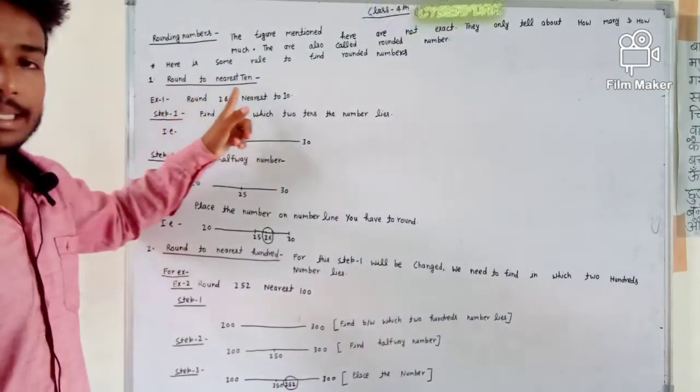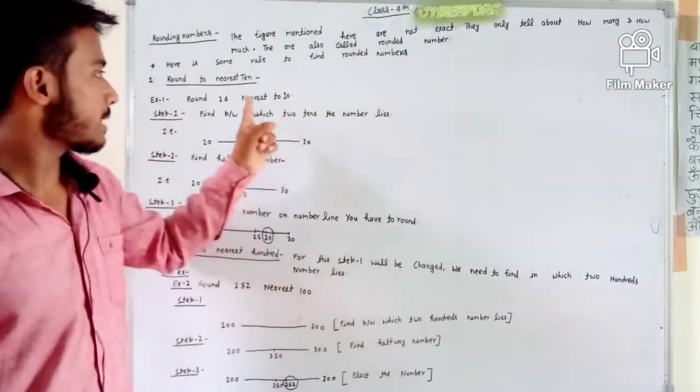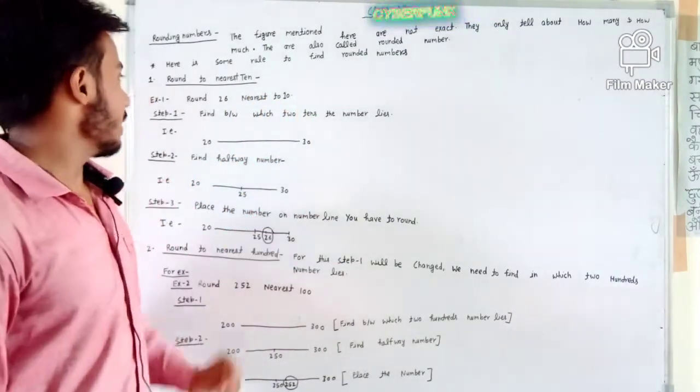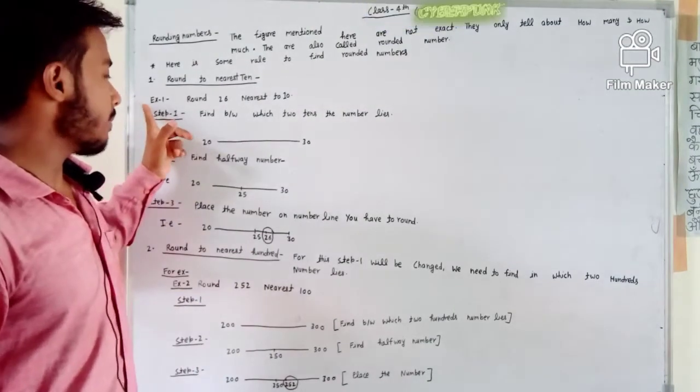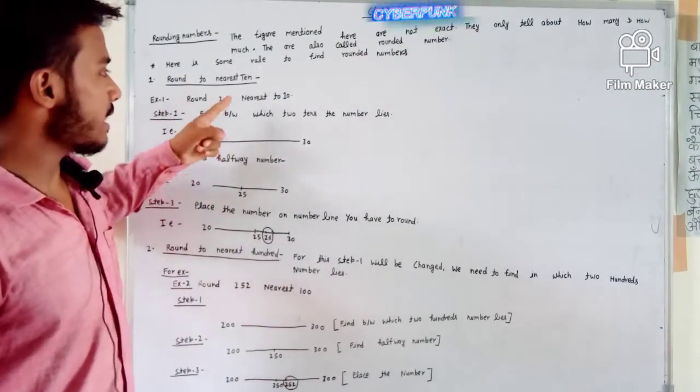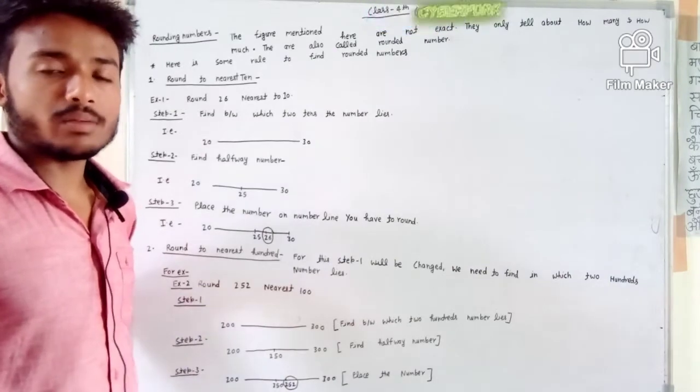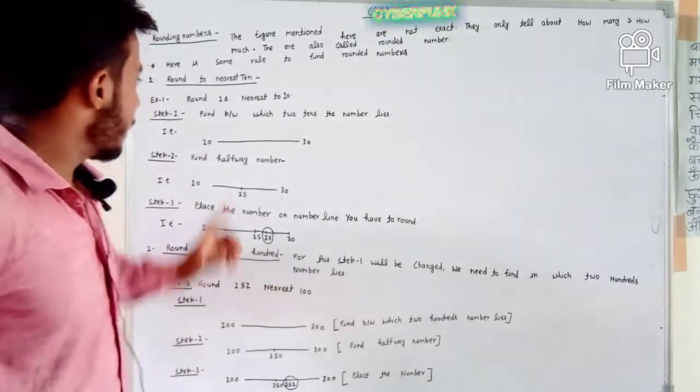So here's the rule for rounding to nearest 10. Let's say we need to round 26 to the nearest 10. First is the rule for rounding to nearest 10.